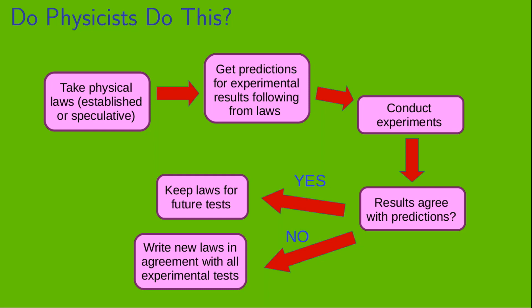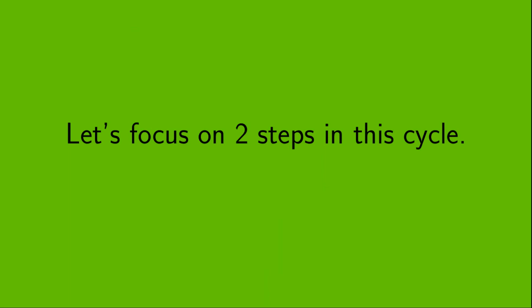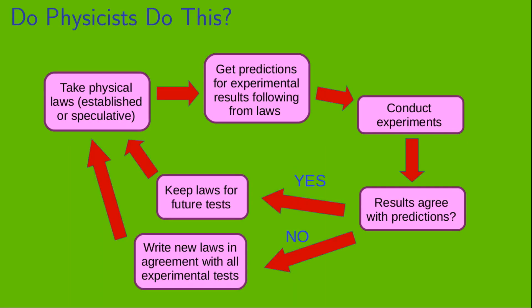If the answer is yes, we keep those laws around for future tests. But, if the answer is no, we write down new laws that are in agreement with all experimental tests that have been conducted to date. And now, with these laws, the cycle starts over. So, let's focus on two specific steps in this cycle.